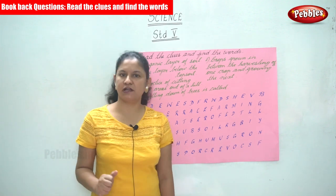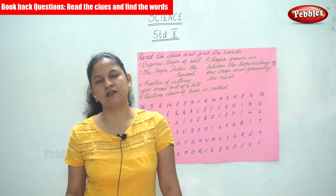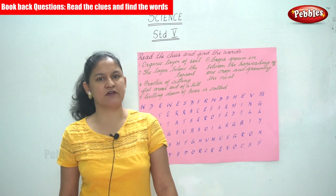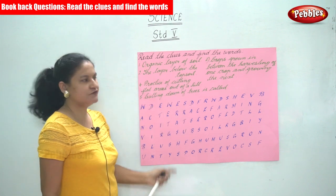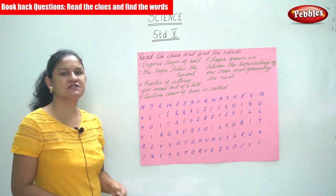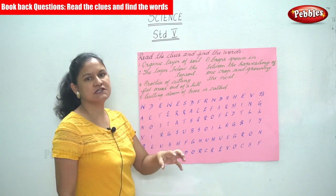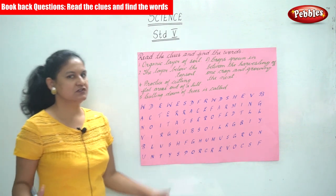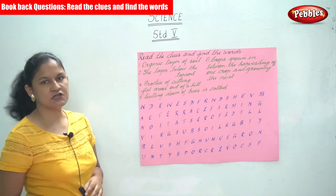We all like to play small games, and when it comes to a crossword puzzle we like to be involved in it, especially when we are thorough with the lesson we have been learning. We are going to read the clues that are given to us, find out what the word is, and then find the word that is hidden in the alphabet grid. Let us see what the first clue is.